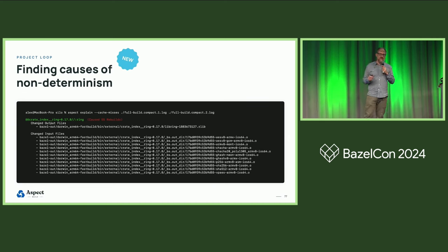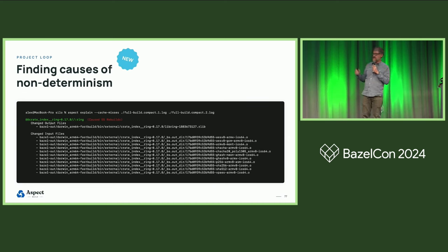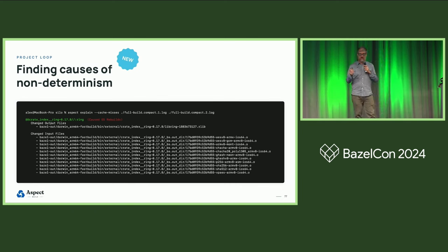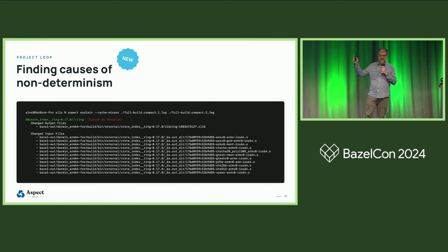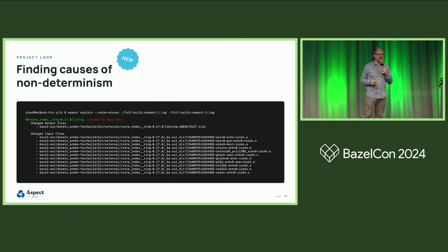One of the ways we keep the build fast is to detect non-determinism. I'm happy to announce the next release of Aspect CLI — it includes this explain command. What it can do is take two compact execution logs, which are now part of Bazel 7 and are fast enough to produce on all builds. We ran this on two builds in our own repo and found that 55 rebuilds were caused by a Rust crate called ring that produced non-deterministic output. This immediately points us to where we need to go to fix that.